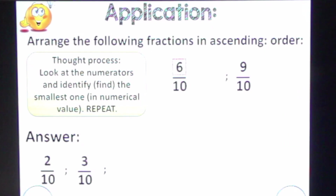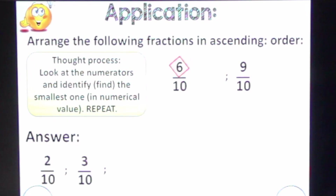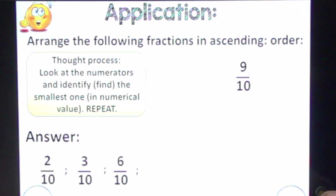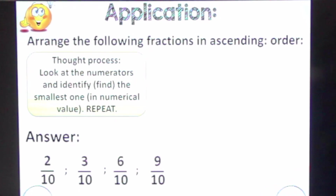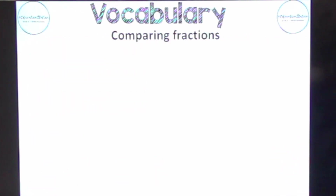Now we're left with the last two: six over ten and nine over ten. Six is smaller than nine, therefore six tenths is written next. And we're left with the last one, which is nine tenths, and nine tenths is therefore the last one in this sequence — written in ascending order, smallest to biggest.